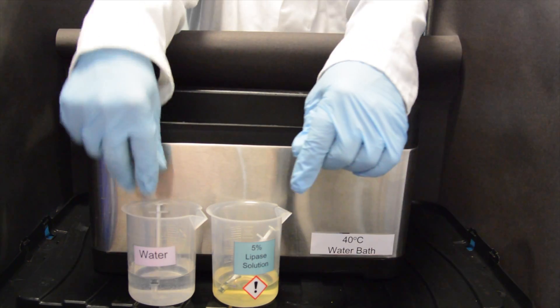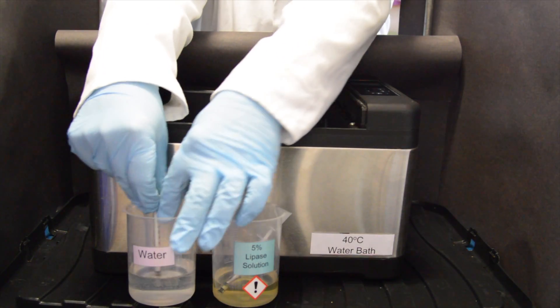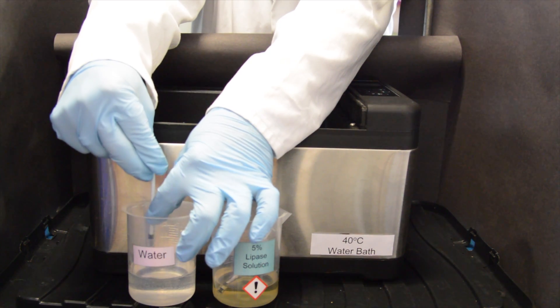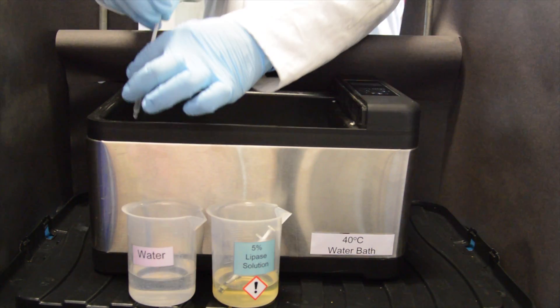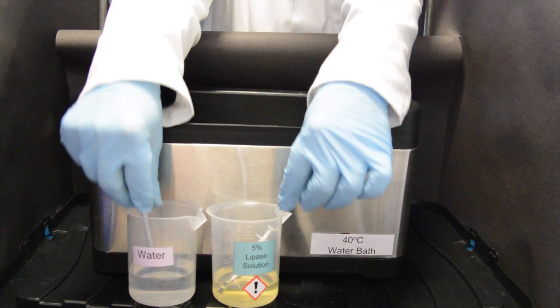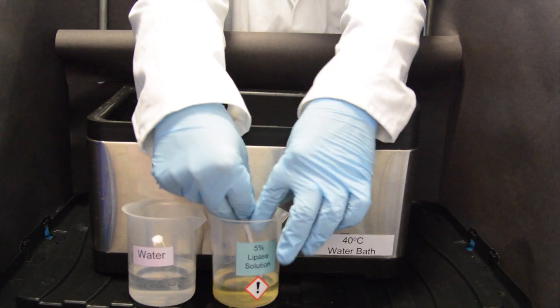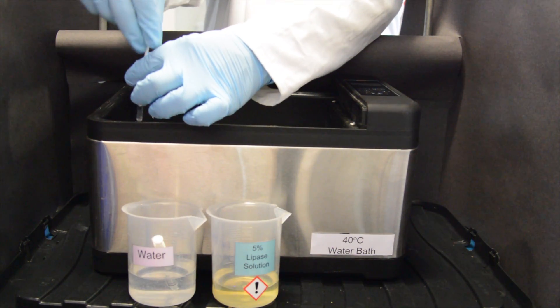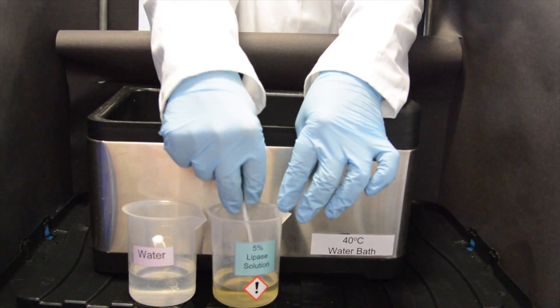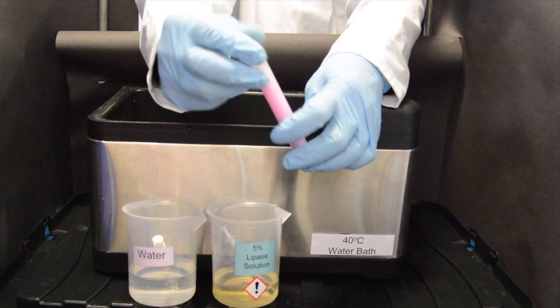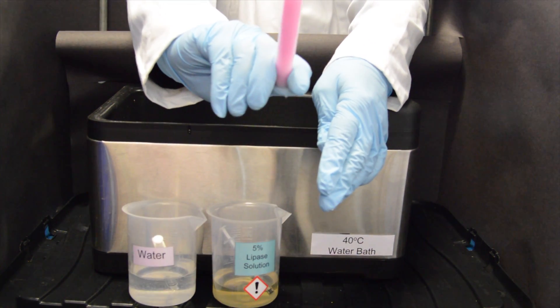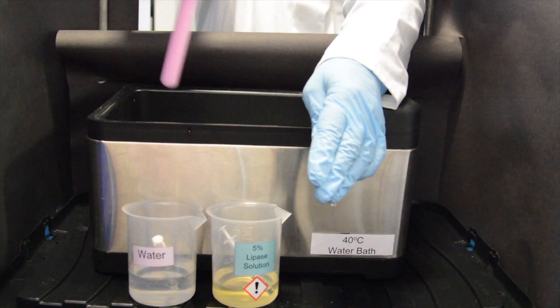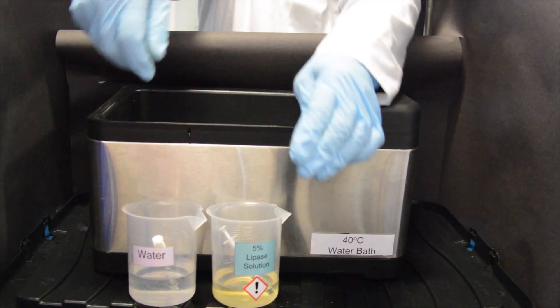To tube number one add one centimeter cubed of water and one centimeter cubed of lipase enzyme. Replace the tube into the water bath and note the length of time it takes for the pink color of the phenolphthalein to disappear.